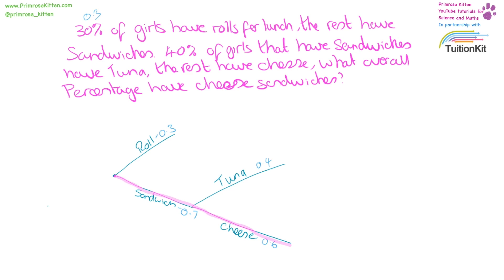This is the branch we are looking at. What we need to do now is work out the overall probability of somebody having a cheese sandwich. That is 0.7 — the probability they have a sandwich — times 0.6 — the probability they have cheese — giving us an overall probability of 0.42.